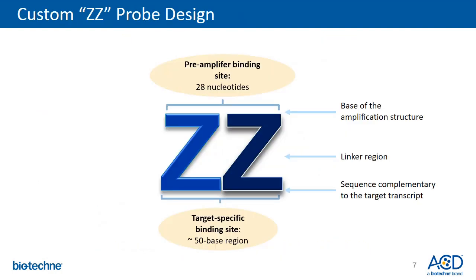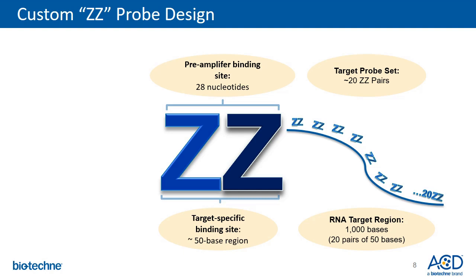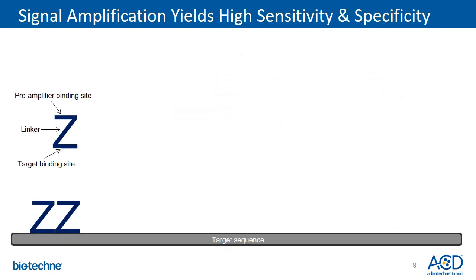The double ZZ probe design is the key feature of RNAscope technology. The bottom of the Z is a 50-base sequence that is complementary to your target sequence of interest, whereas the top of the double ZZ serves as a pre-amplifier binding site where the signal amplification cascade occurs. A standard RNAscope probe is a pool of 20 ZZ probe oligos that covers a 1 KB region of your target sequence, selected based on our proprietary probe design algorithm.